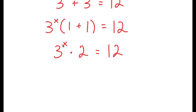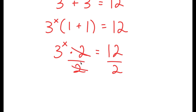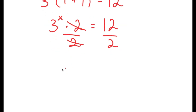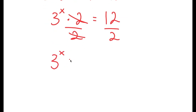From here, we want to isolate x. To do that, we have to get rid of this times 2 by dividing both sides by 2. So now these two cancel out, and I'm left with 3 to the power of x is equal to 12 divided by 2, which is 6.